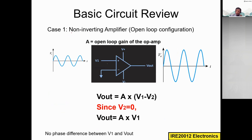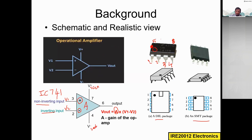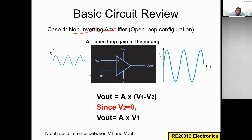Now let's look at two types of amplifier configurations. The first is the non-inverting amplifier. We call it non-inverting because the input is applied to the positive terminal, which is the non-inverting input terminal. The inverting input is grounded, meaning its voltage potential is zero. The output is therefore V_out = A × V1, since V2 = 0.